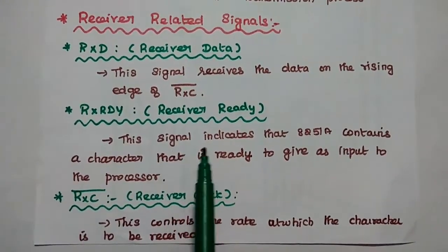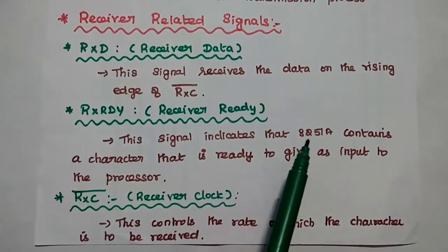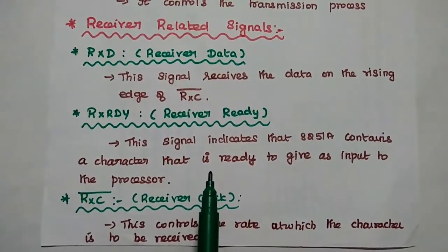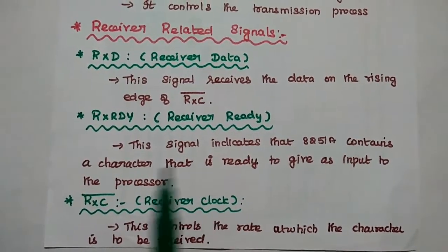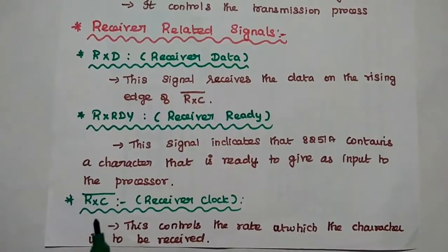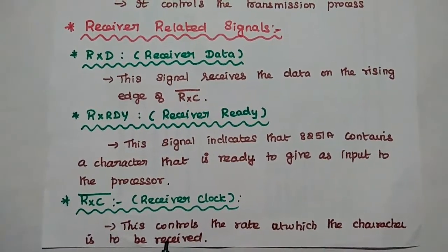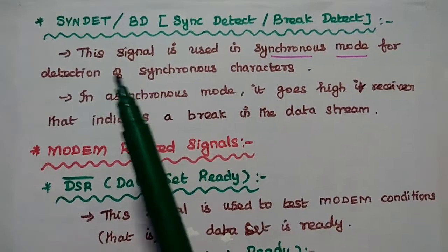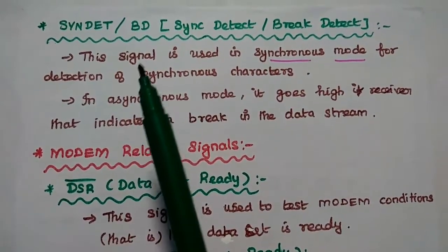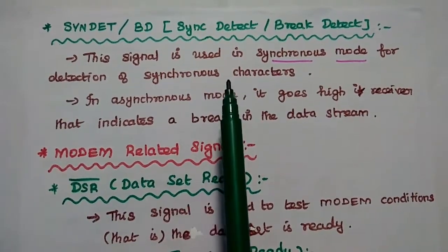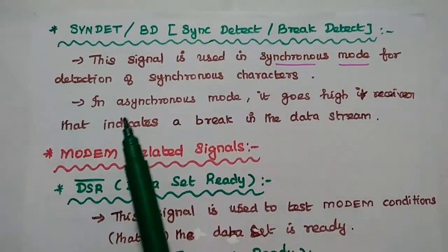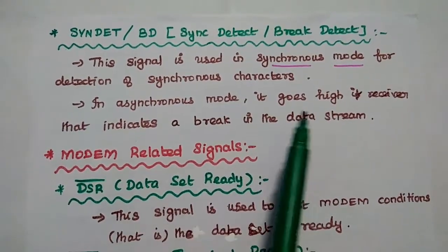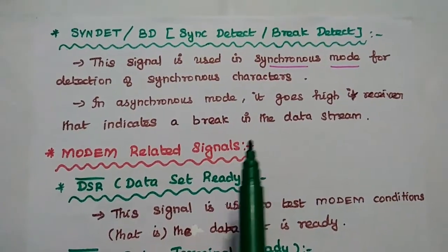The receive ready signal indicates that the USART contains a character ready to be given as input to the processor. The receiver clock signal controls the rate at which characters are received. The synchronous detection or break detect signal is used in synchronous mode to detect the synchronous character. In asynchronous mode, it goes high to indicate a break in the data stream.